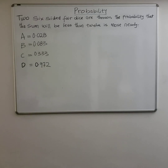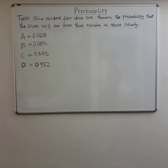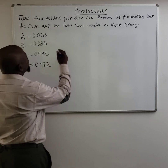Hello everyone, welcome back. We have a probability problem today. Two six-sided dice are thrown. The probability that the sum will be less than 12 is most nearly... This is a typical dice problem. These dice are six-sided and we have two of them, both thrown simultaneously. The question is: what is the probability that the sum will be less than 12?